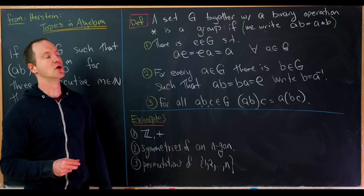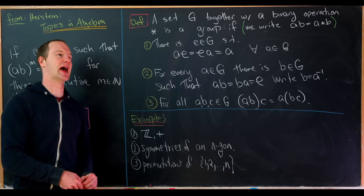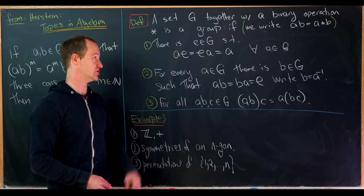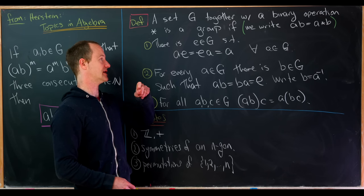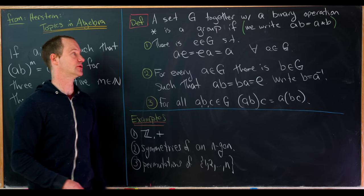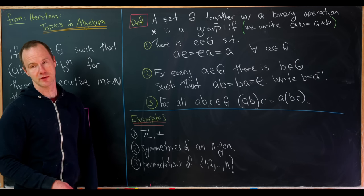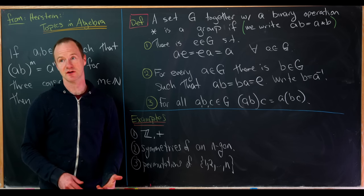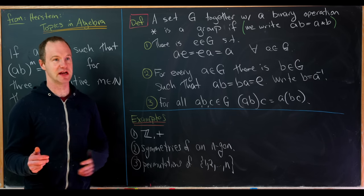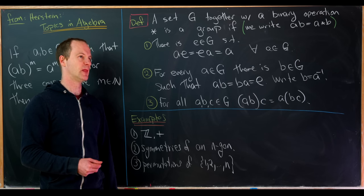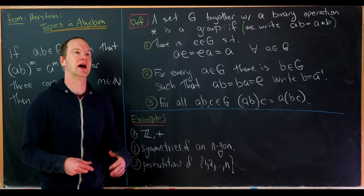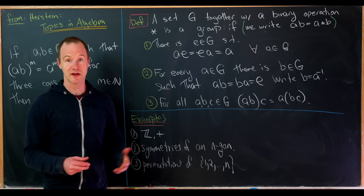So what are the three axioms? First, every group has to have an identity. That means there's an element, which we'll call little e in G, such that a times e equals a and e times a equals a, for all a in the group. For the integers with addition, the identity is clearly zero, because if you add zero to anything you end up with whatever you started with.